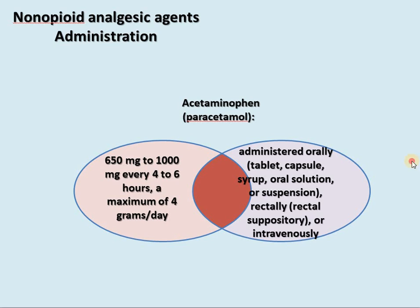Regarding administration of non-opioid analgesic agents: acetaminophen/paracetamol is given orally or intravenously. The normal dose is 650–1000 mg every 4–6 hours, with a maximum of 4 g per day.